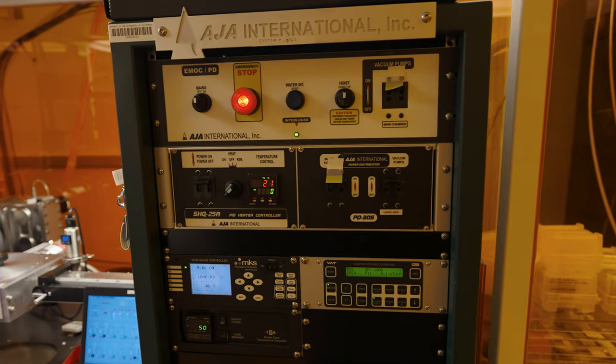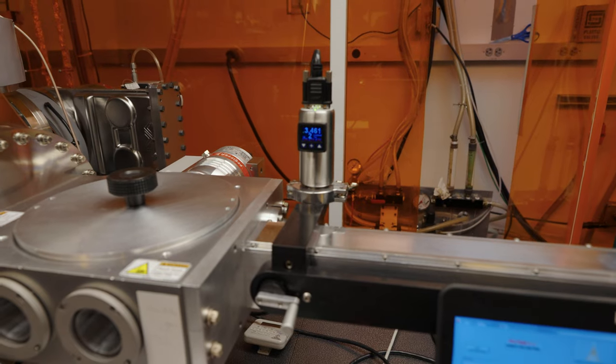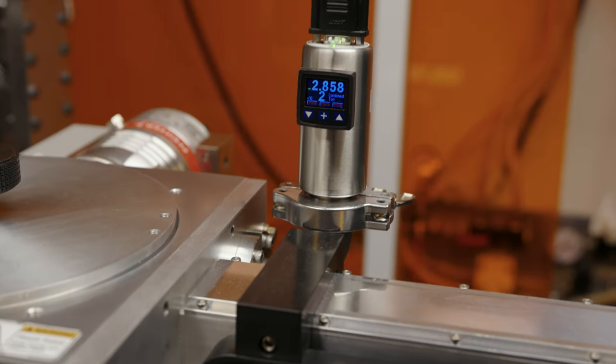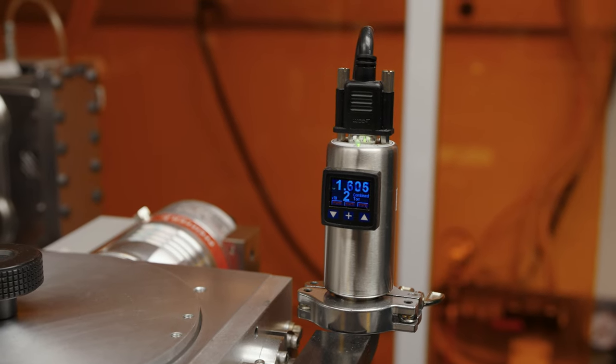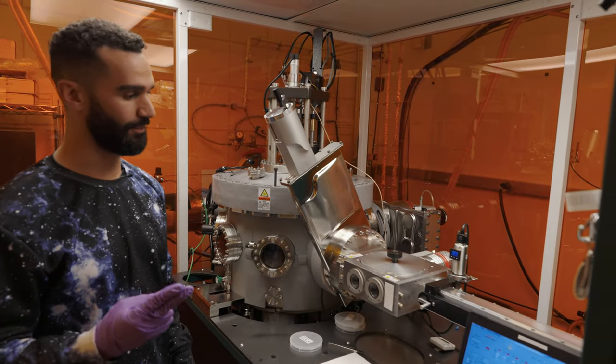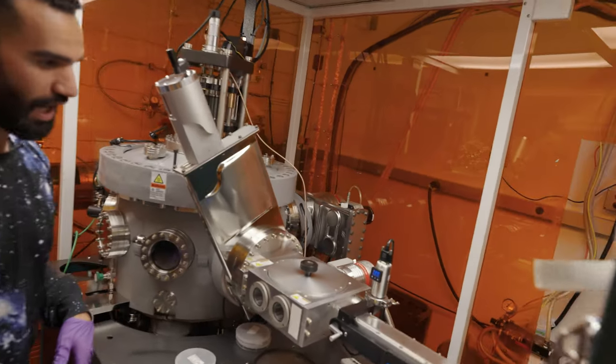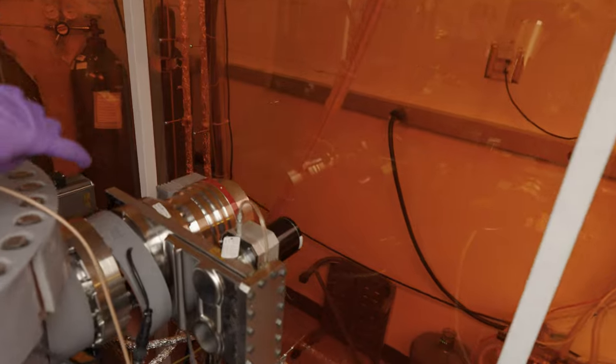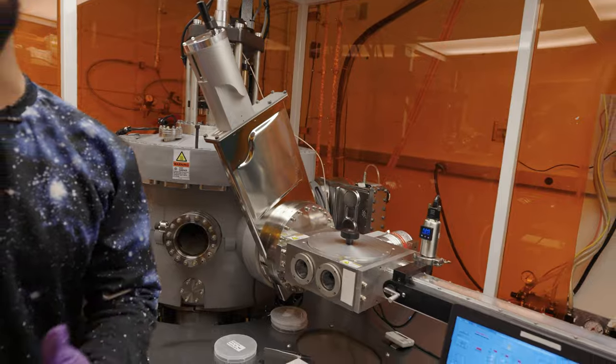Now we're going to vent the load lock. We'd like the pressure to drop below e to the negative six torr before opening the gate valve for the main chamber. We have two main pumping mechanisms: one is this main turbo pump which can be seen back here, and the other is a cryo pump shown right here.